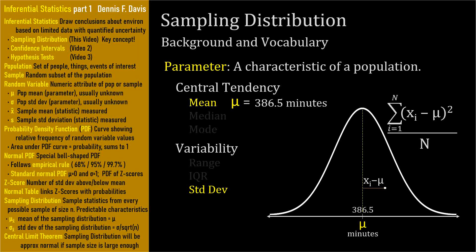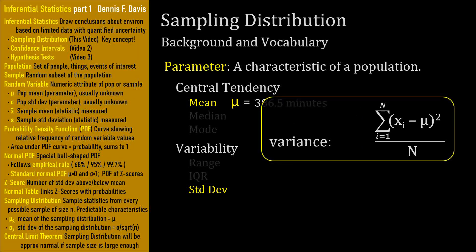The symbol for variance is lowercase Greek letter sigma squared. Because we squared the differences, the units of variance are squared — easy to remember because the symbol is sigma squared. So for the batteries, the variance of their lifetime is in minutes squared, and the variance of our population of battery lives happens to be 1866 minutes squared.